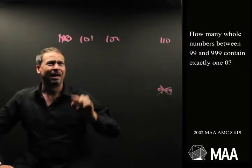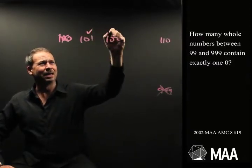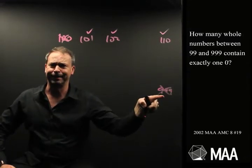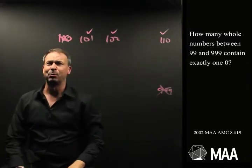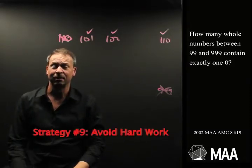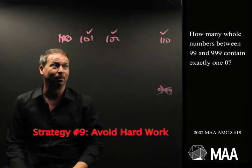But that seems awfully hard. How many numbers, like these guys, have exactly one zero, between 100 and 999? Well, listing them all out seems like too much hard work. So I'm going to do strategy number nine, which is to avoid hard work. Is there a better way to think about this problem?